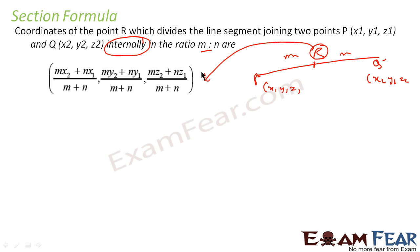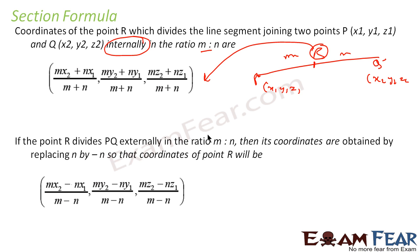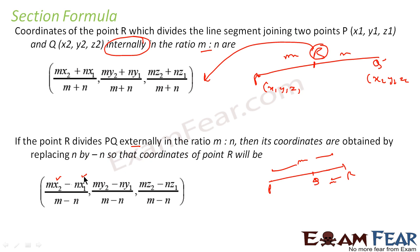Very simple and similar to the two-dimensional formula — we have only added z here. Similarly, if you are dividing externally, where point R lies outside segment PQ, and it divides in M to N ratio, then the formula becomes (mx2 − nx1)/(m−n), (my2 − ny1)/(m−n), and (mz2 − nz1)/(m−n). Just instead of positive signs, we use negative signs.